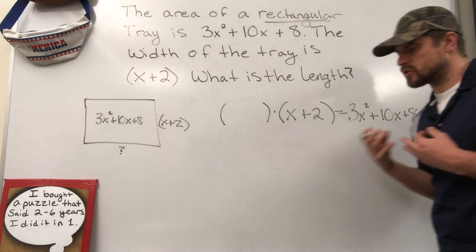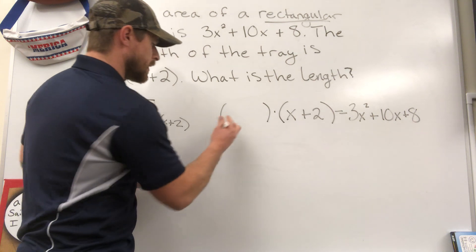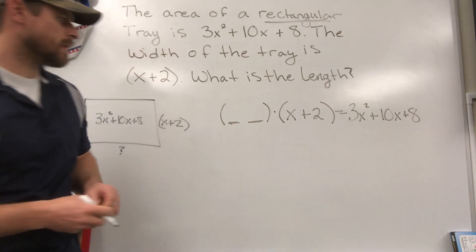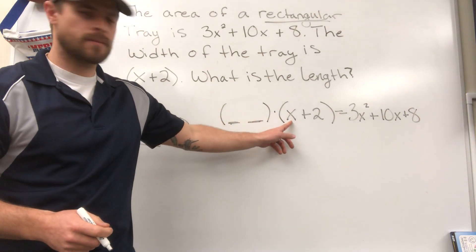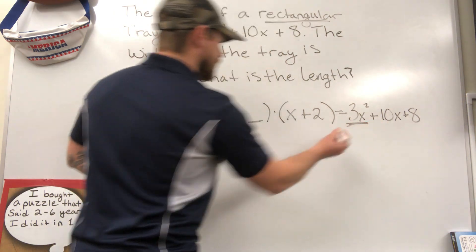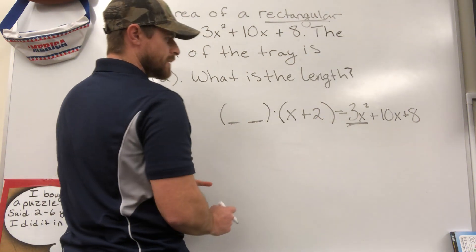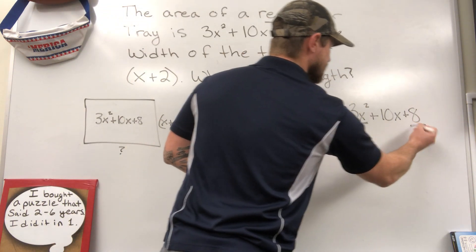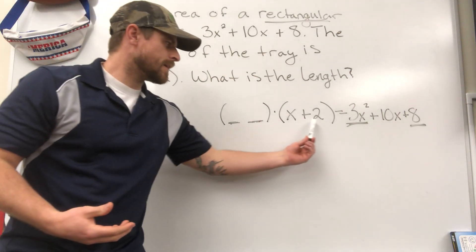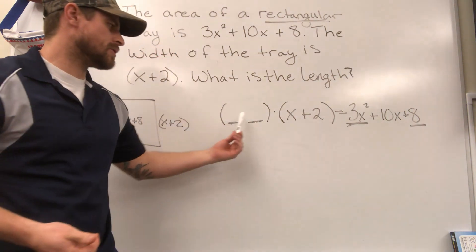Now once you work with these long enough, you start to figure out a pattern. You start to realize that the first term, remember we're going to have a term right here and we're going to have a term right there. First term, second term. Our first term times our first term of each binomial will always create our a. And we know that our last term in the first binomial and our last term in the second binomial will always create what we call the c.